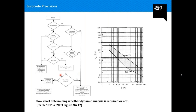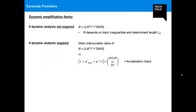Based on the flowchart, if dynamic analysis is not needed, we go for static analysis combined with a dynamic amplification factor — we run the static train load and amplify with the dynamic magnification factor. However, if dynamic analysis is needed, we check the most unfavorable value by comparing static with dynamic results and use whichever governs in our design. In addition to dynamic analysis, we also need to perform an acceleration check.